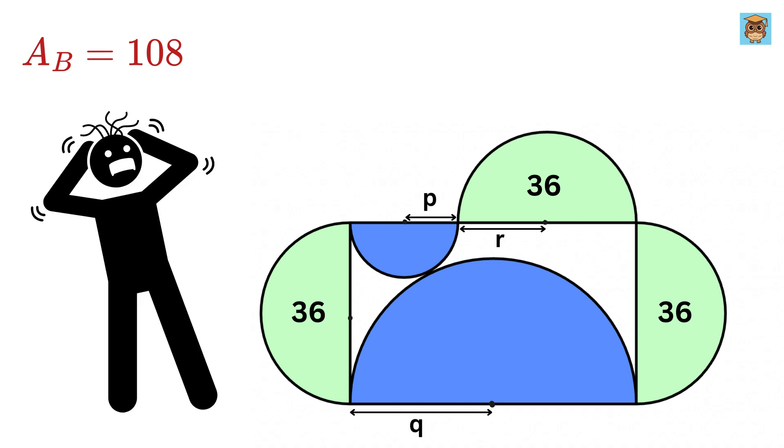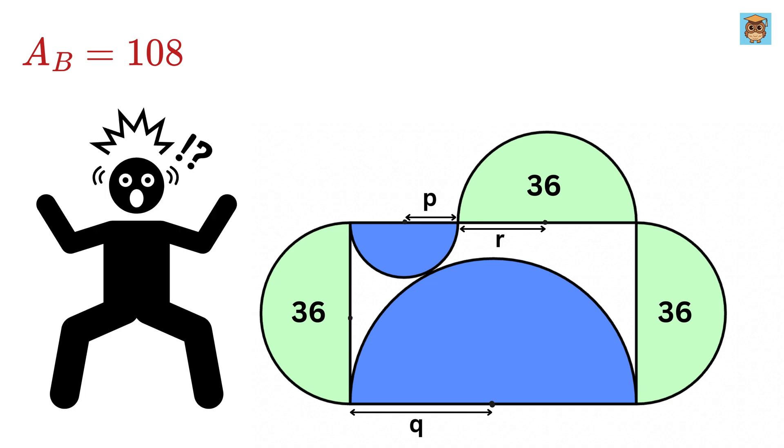This is so crazy, and my mind is fully blown, because we have not even found the values of P and Q, and still, we have managed to find the sum of the blue areas.